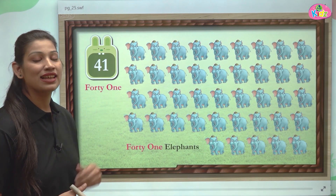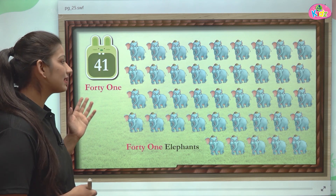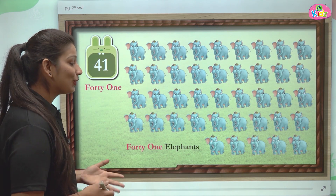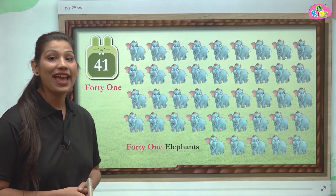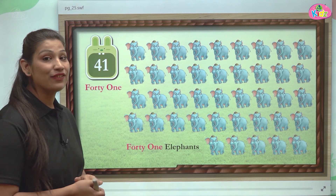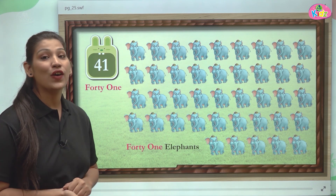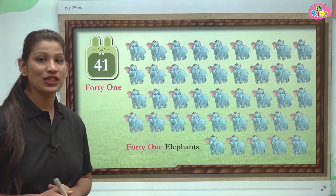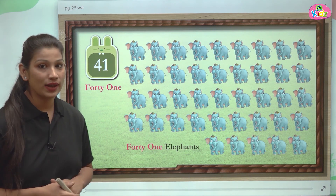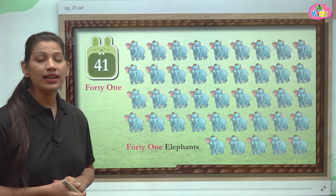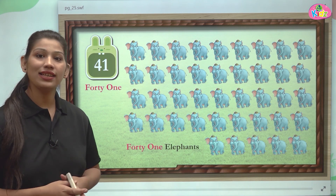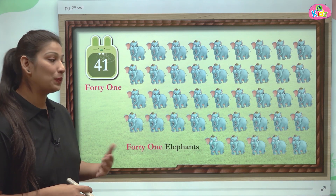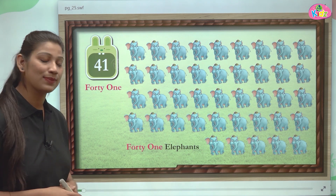This is the number 41 — 4 and 1. Here you can see elephants. These elephants are 41 in number. 1 is at the 1's position and 4 is at the 10's position. This is the number 41 and we can see 41 elephants.